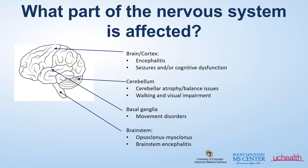You can get brainstem involvement causing a brainstem encephalitis. There is one particular syndrome called opsoclonus myoclonus, which is a disorder that causes jumpy eye movements as well as jumpy movements within the body. Other symptoms when the brainstem is affected include double vision, weakness, and swallowing problems.